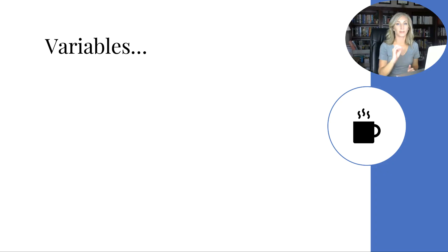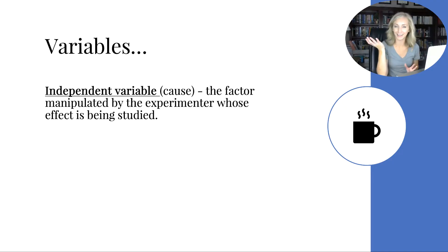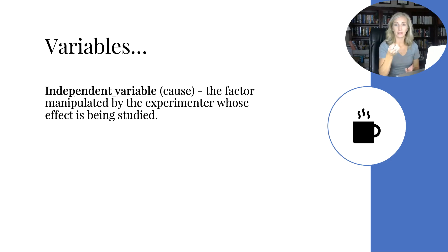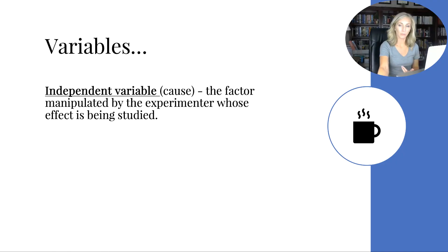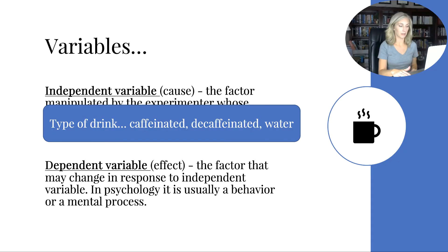Now let's talk about variables — this is where people tend to get hung up. The independent variable is the cause. It's independent because it does what it does regardless; caffeine is going to come in and do what it does. It's the factor manipulated by the experimenter — assigned to either the experimental or control group — and whose effect is being studied. If you want to know the effects of caffeine, caffeine is the cause you're measuring. So the type of drink (caffeinated, decaffeinated, or water) is our independent variable.